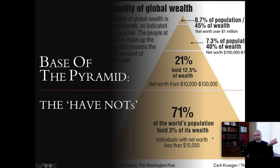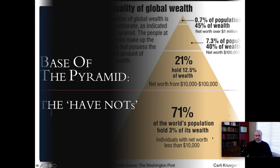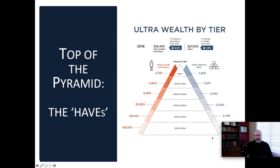One person for every half billion at the base of the pyramid as an average. What about the top of the pyramid — the people who are the haves? Those are ones who have what might be called ultra-wealth. We can see what that population is, the number of individuals, and the total wealth that they hold. This is just looking at approximately the top 3.5% of people in the world, from about 2015.